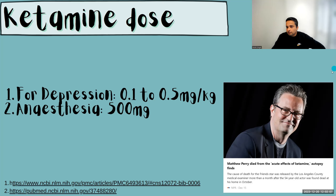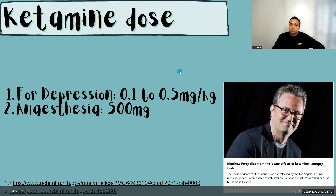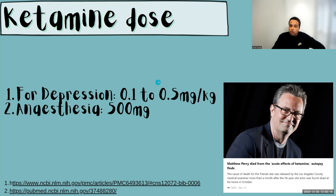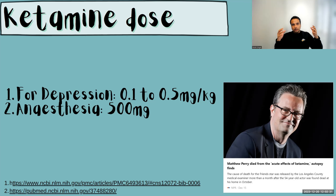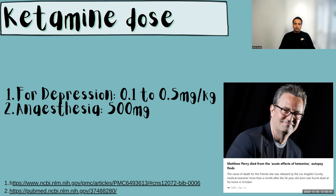What happened in the case of Mr. Matthew Perry is that he took approximately 10 times the required medication dose, going close to 500 mg. He was in his bathtub when he took that overdose of ketamine. Instead of acting as an antidepressant, it became anesthetic — he was knocked out while in a bathtub filled with water. He had no consciousness and basically drowned in his bathtub, and that led to his death.